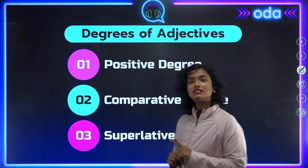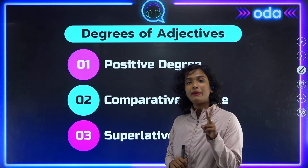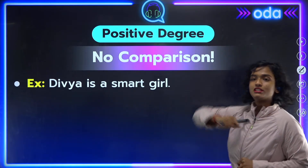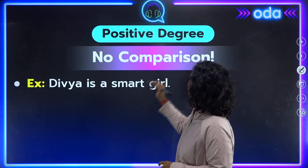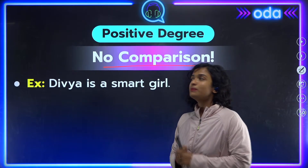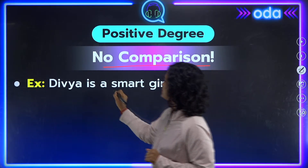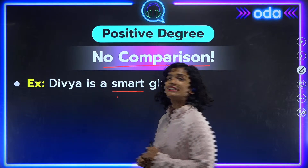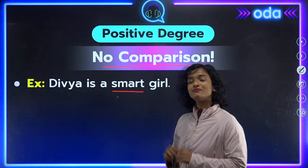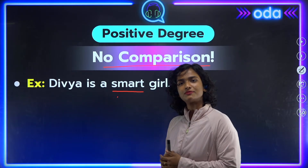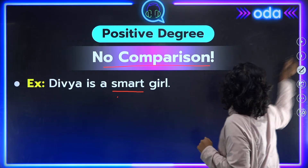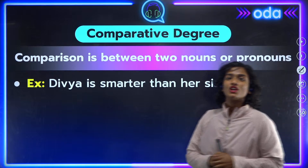The first degree is the positive degree. Positive degree adjectives simply tell you more about the noun with no comparison involved. For example, 'Divya is a smart girl' — all 'smart' does is tell us about Divya; there is no comparison. Similarly, 'That is a beautiful red dress' — once again, no comparison.